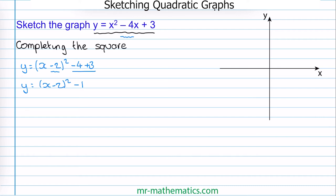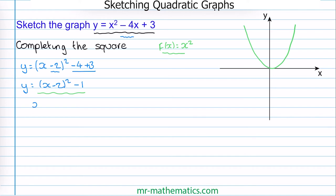I'm going to use function notation to transform the most basic quadratic, which is when f of x is equal to x squared. So now we're going to transform this function to create this graph. We have x minus 2 in place of x — this is what we're squaring. So we write f of x minus 2 is equal to x minus 2 squared. I've just substituted x minus 2 in.